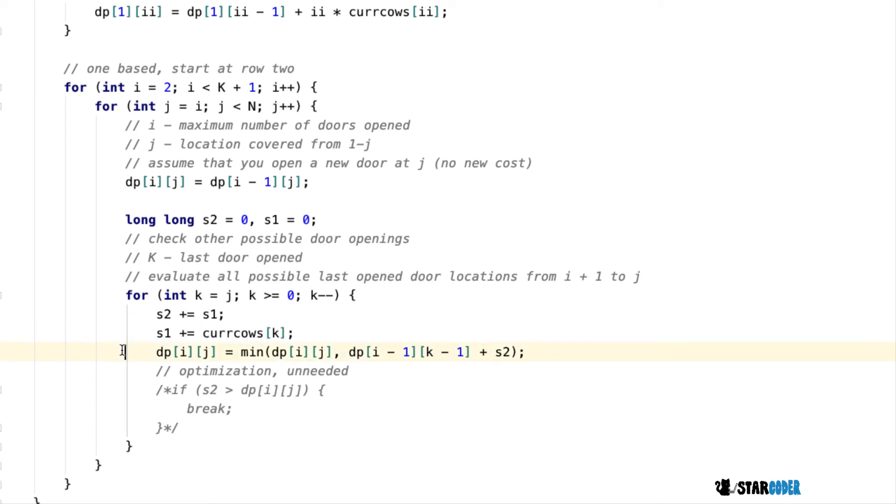We add the previous cost, update s1, and then update our DP by making it the minimum of itself and DP[i-1][k-1] assuming we have a door at K, plus the distance s2.